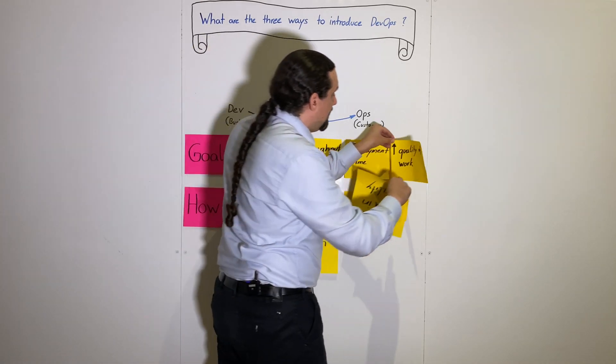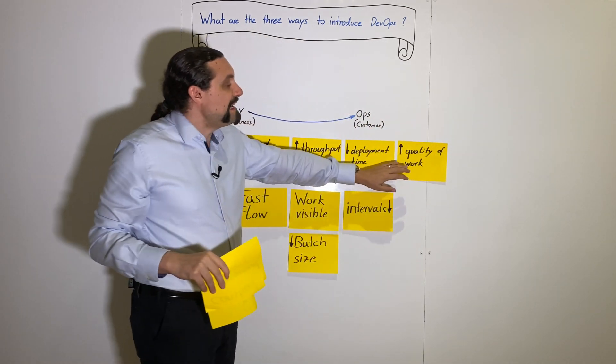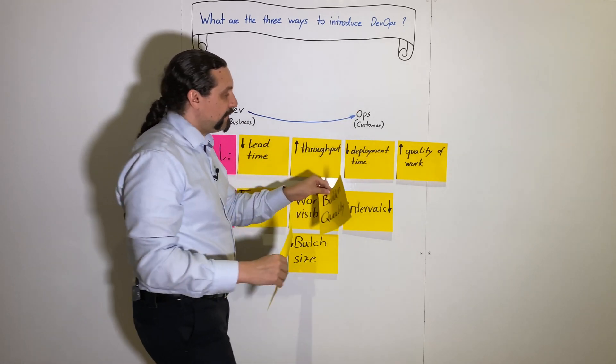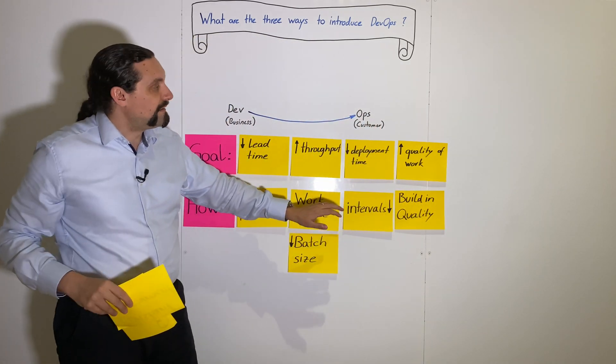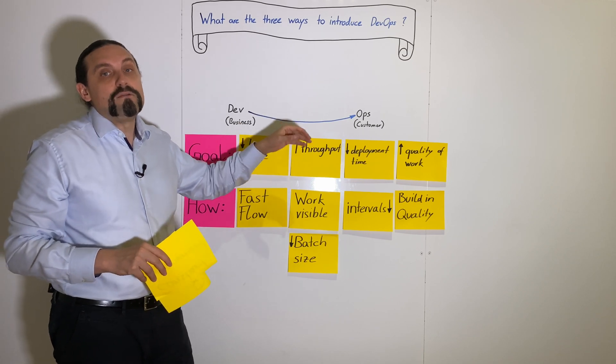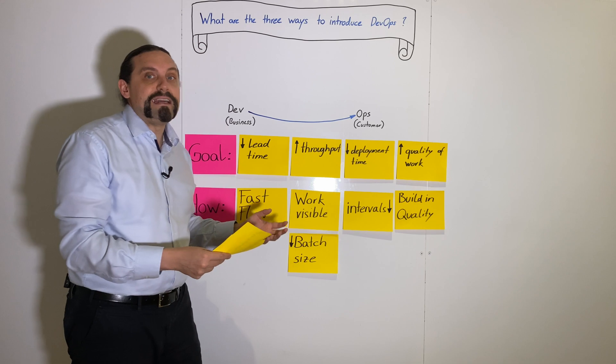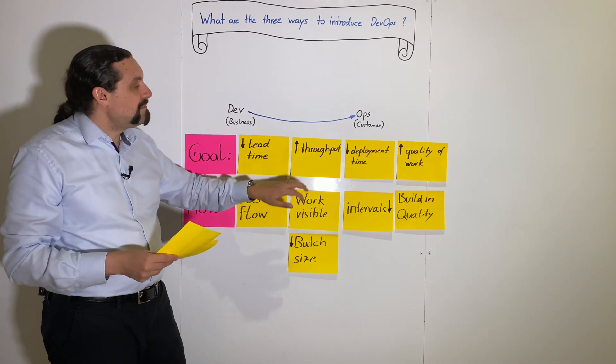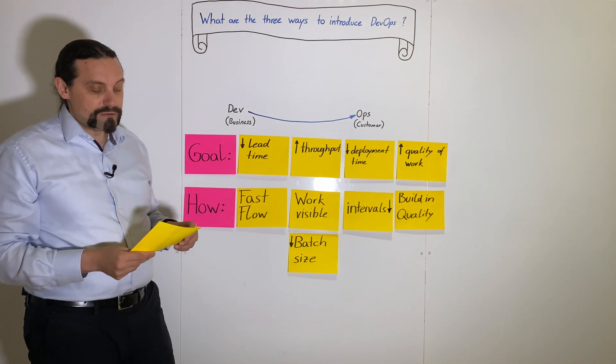And of course when we want to do that, we also have the goal to increase the quality of work which goes to the customer. For that we need to build in the quality. We need to build in and automate the quality testing. So we need to have a proper continuous integration pipeline with automated testing directly in there, so that we can reduce the deployment pipeline, increase the throughput, and reduce the lead time.